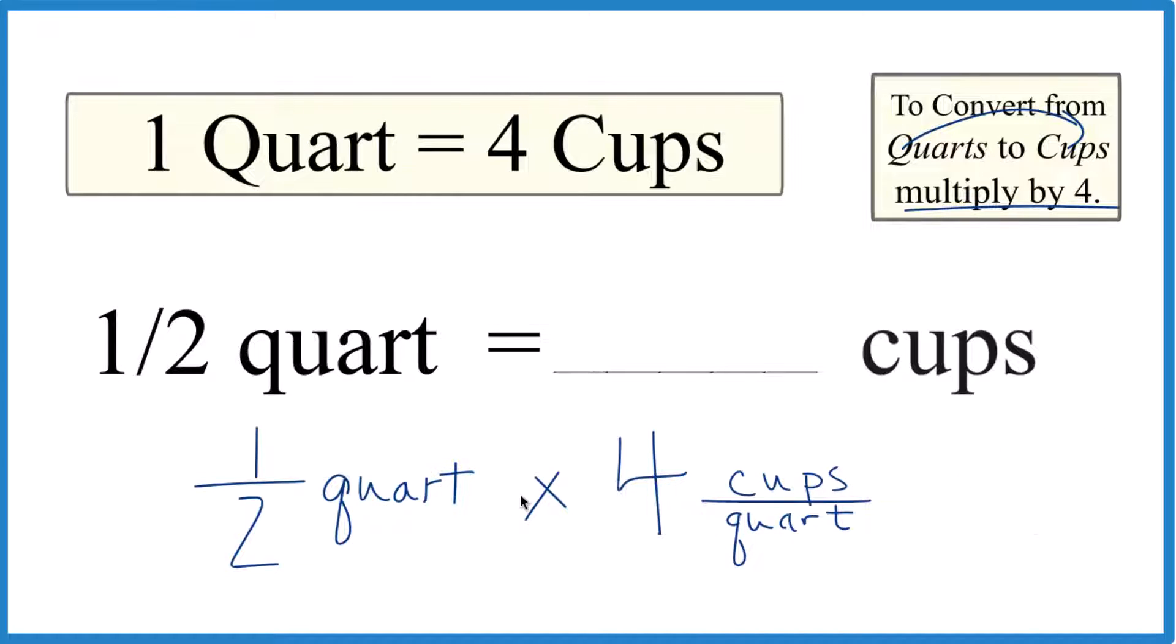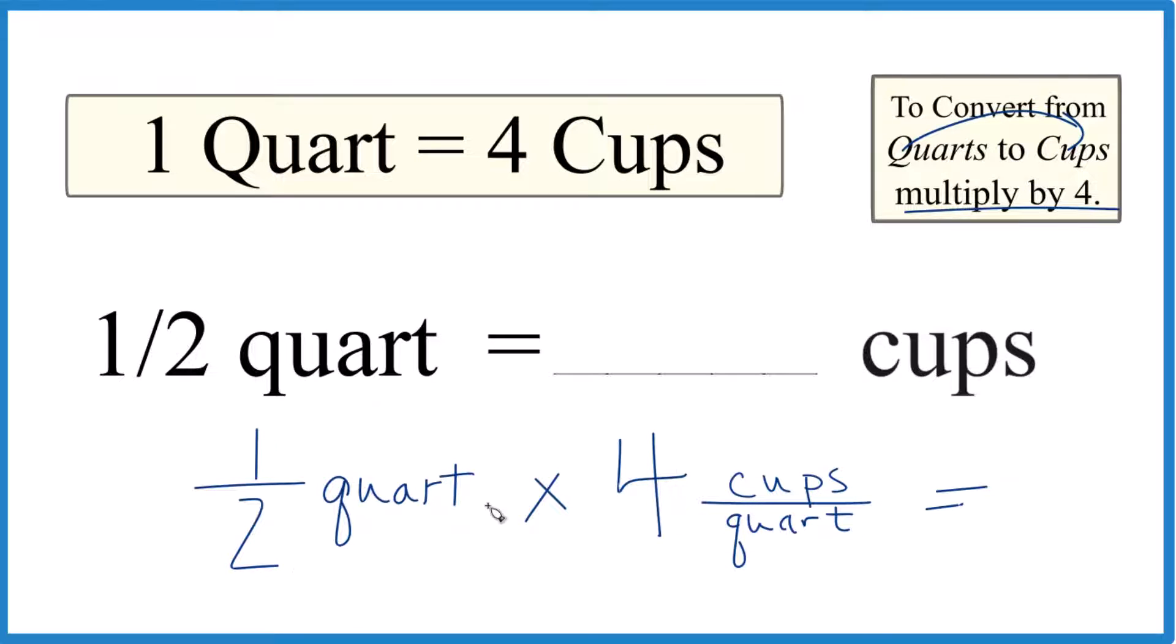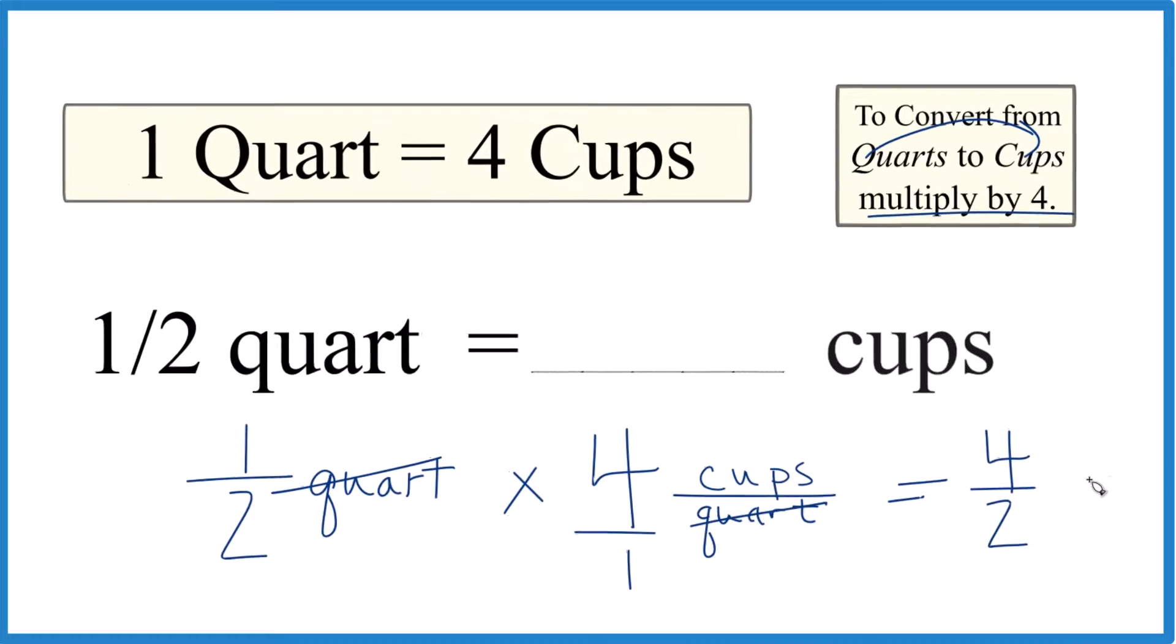And again, if you take one half times four, that's like one half times four over one. So one times four is four. Two times one is two. And we have quarts up here and quarts down here. We're left with cups.